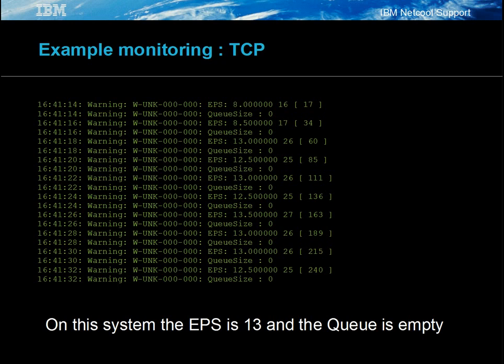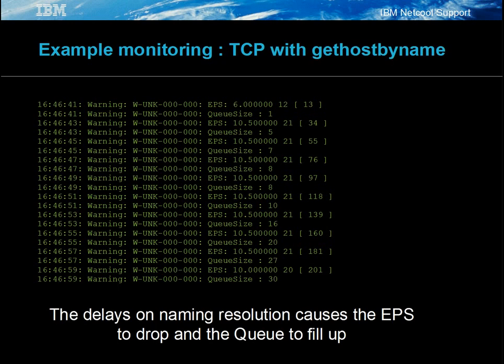In this example, the traps are sent as TCP traps. In this example, gethostbyname is used many times in the rules files. Because of the external query, event processing is impeded significantly.